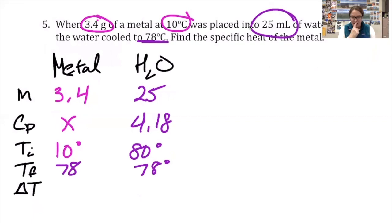Now this gives me the ability to calculate my two change in temperatures. Difference between 78 and 10, bigger minus smaller, will give me 68 degrees. Bigger minus smaller will give me 2 degrees.